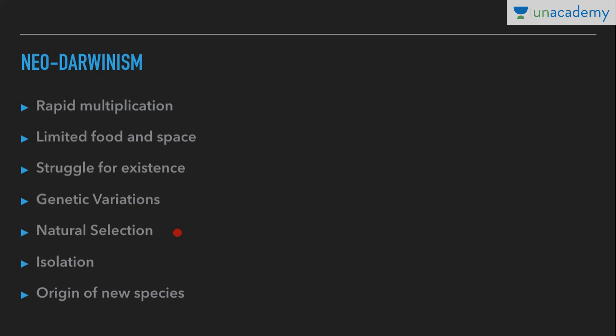Natural selection occurs through differential reproduction — some individuals produce more offspring, some fewer. Over many generations, genes of individuals producing more offspring become predominant in the gene pool, and thus natural selection occurs through differential reproduction in successive generations. Then isolation: segregation of a population by barriers that prevent interbreeding leads to reproductive isolation and formation of new species.